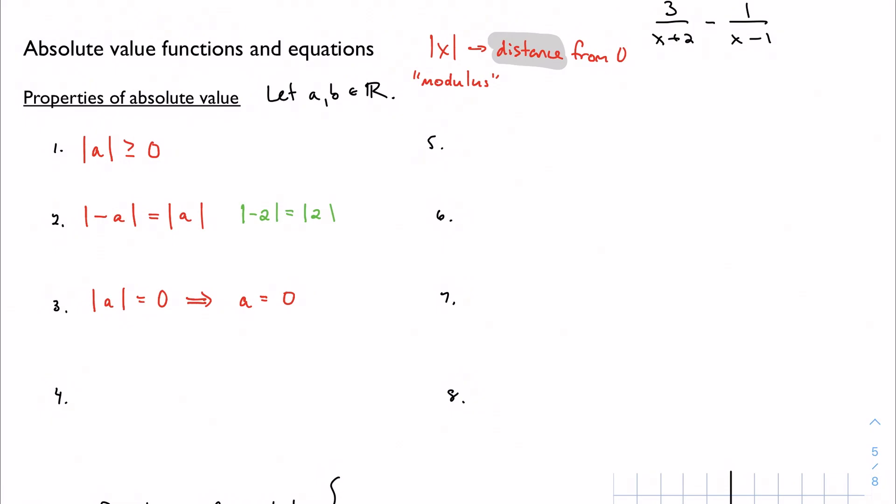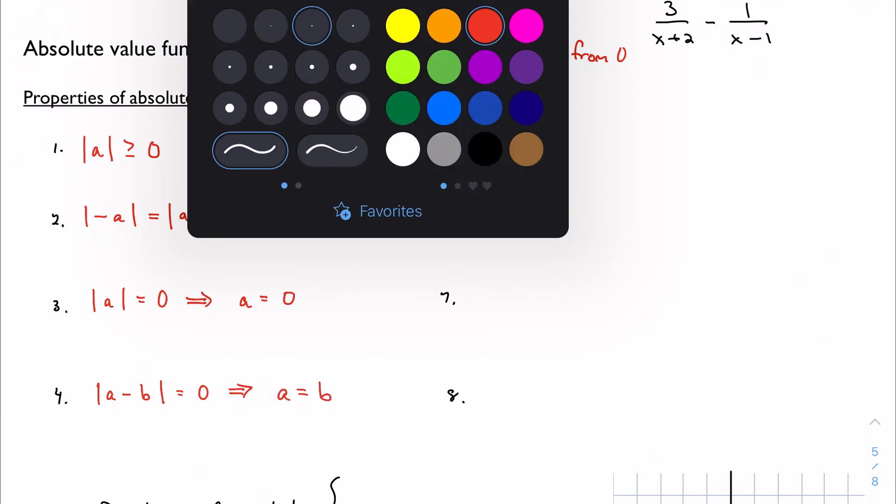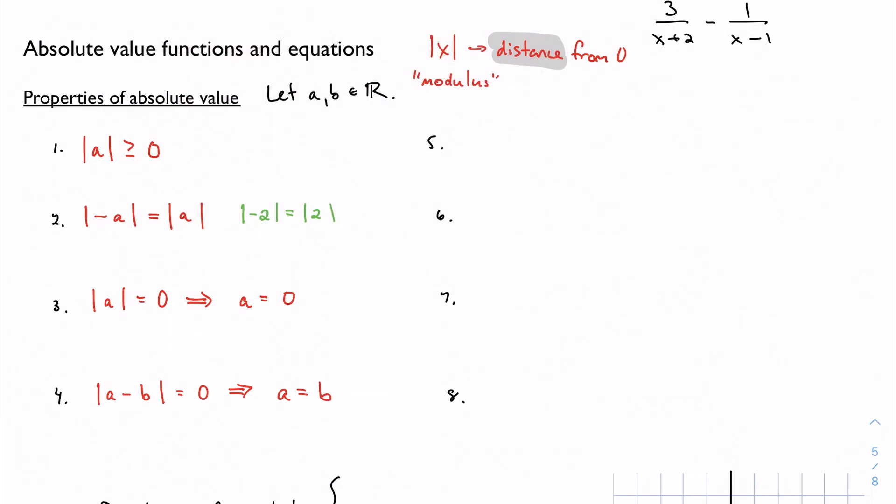Because of property three, it follows that the absolute value of a − b equals zero implies that a equals b. And the proof for that is as easy as just employing step three. So I'll leave that up for you guys to figure out.